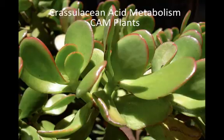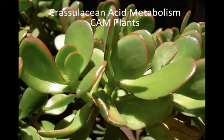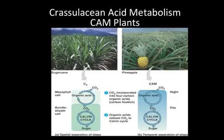Another alternative pathway has also evolved to combat the issue of hot, dry weather. CAM plants use a similar method to the C4 plants. CAM stands for crassulacean acid metabolism. Crassulaceans are plants better known as succulents, like this jade plant — they have plump leaves filled with water. They capture the CO2 and store it on a 4-carbon acid, but what's different from C4 plants is that this is done exclusively at night. During the day, the stomata can be completely closed as the CO2 source is released and the sugars are made.